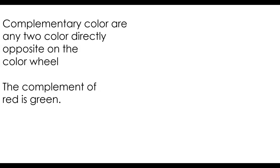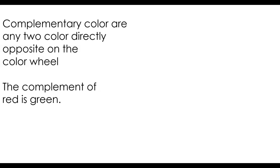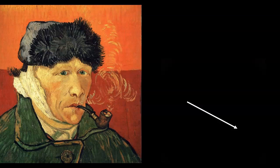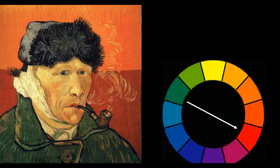Complementary colors are any two colors directly opposite on the color wheel. The complement of red is green, and the complement of violet is yellow. Here's an example of a composition done in complementary colors by Vincent van Gogh. The two colors predominantly used in this composition are green and red.